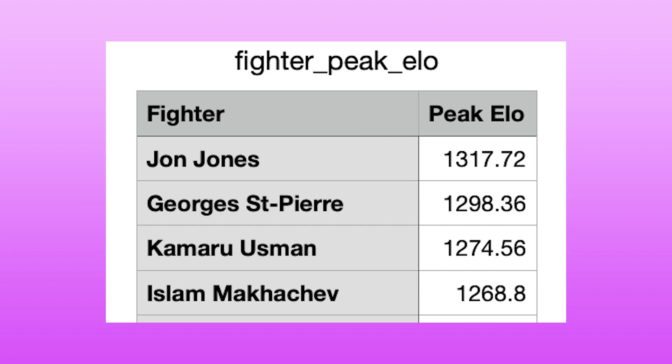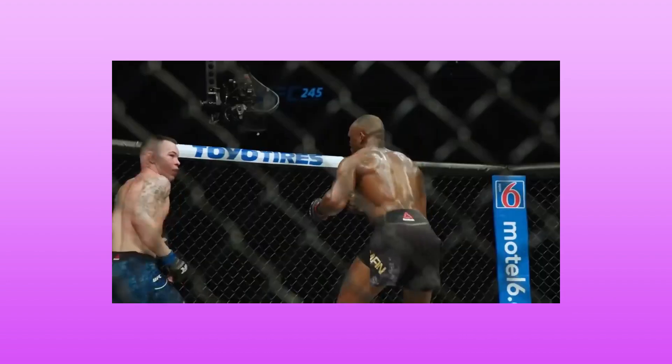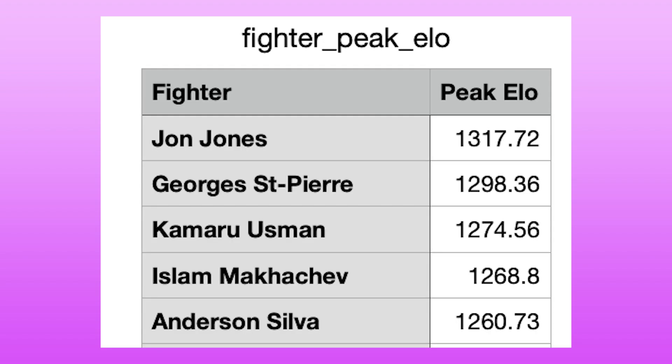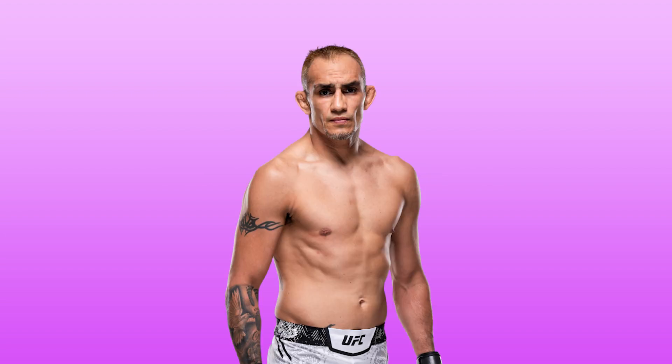At the number three spot, sitting at 1274.56 — taking Islam's spot on the original list — is one of the best welterweights of all time, Kamaru Usman. This bumps Islam down to number four. Kamaru did have an incredible run beating so many notable opponents. For the fifth spot, sitting at a peak ELO of 1260.73, is the Spider, Anderson Silva. Looking at peak ELO makes this even more spicy at the top and does justice for people like Silva.